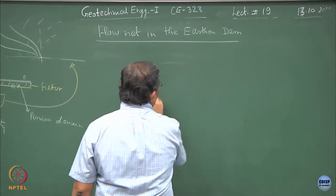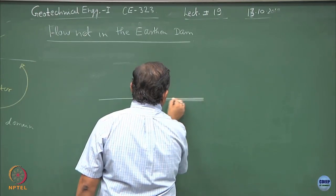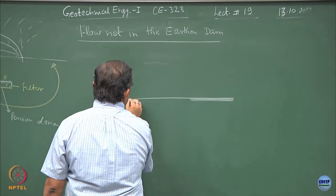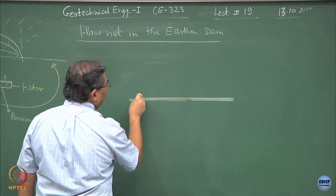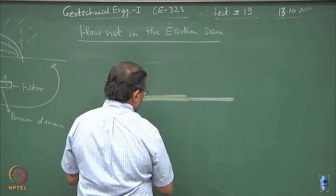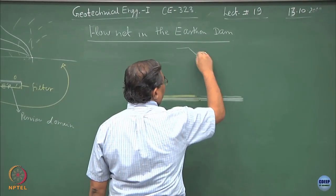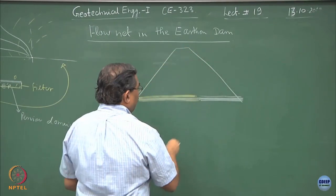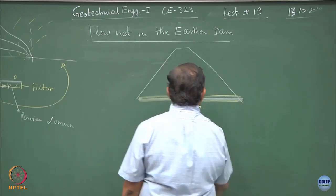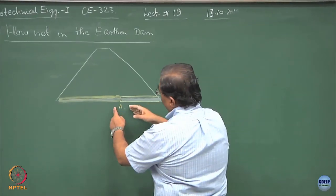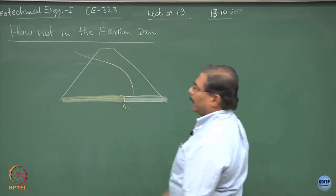Imagine if you want to construct a dam — you will first lay in this portion a certain layer of granular material, then start laying the soil on this side and compacting it. Second layer of soil, second layer of gravel or sands, and then you give it the shape of the final embankment. This becomes my drainage layer and point A gets shifted inside. The moment I have done this manipulation, the top flow lines will always come and cut at the vertex.